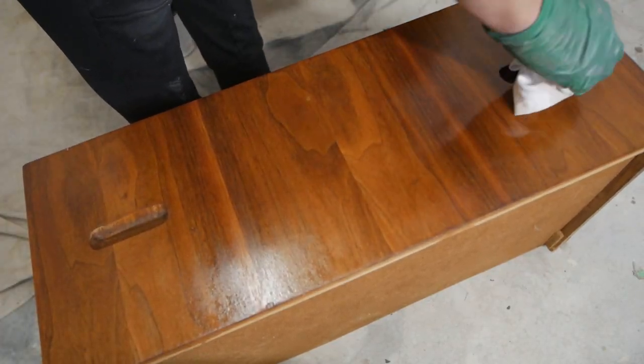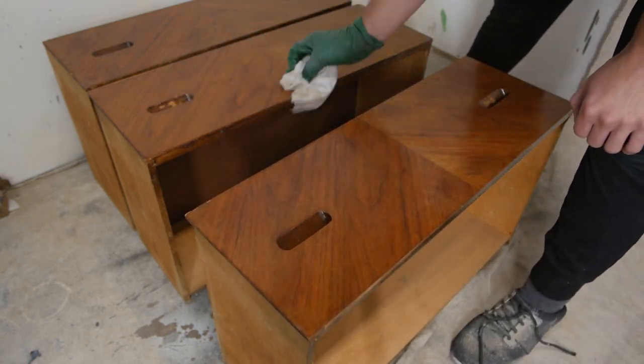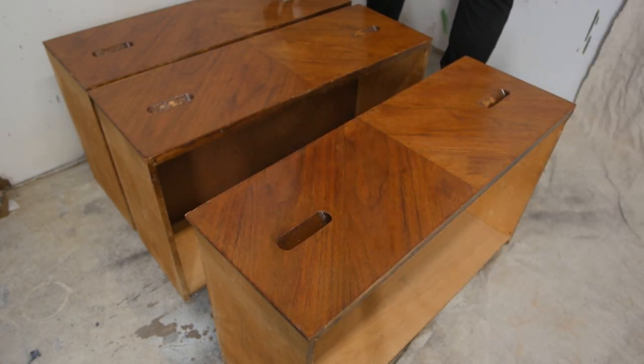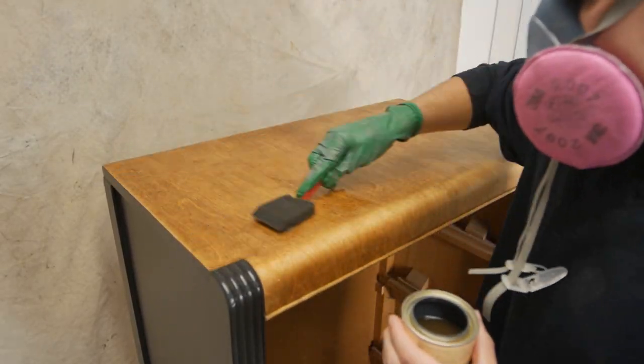After letting the wood conditioner sit for a couple of minutes, just wipe it off with a clean rag. And then I did the same steps on the top of the dresser.